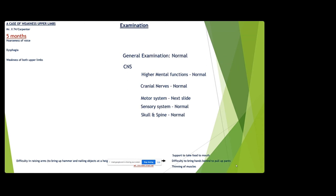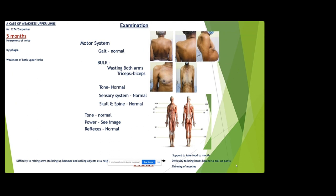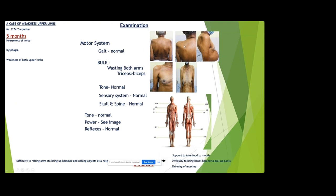On general examination: normal. Cranial nerve examination: normal. Central nervous system: higher mental function normal, cranial nerves normal. Motor system: gait was normal. Bulk: there was wasting of both arms, triceps more than biceps. Tone was normal. Reflexes were normal. Sensory system was normal. Skull and spine were normal.